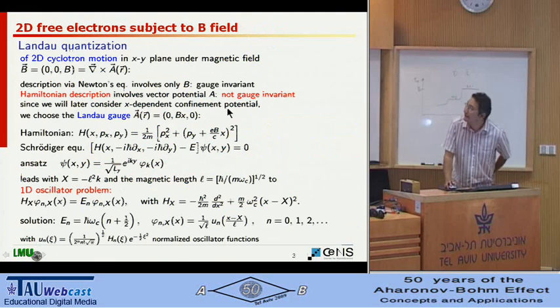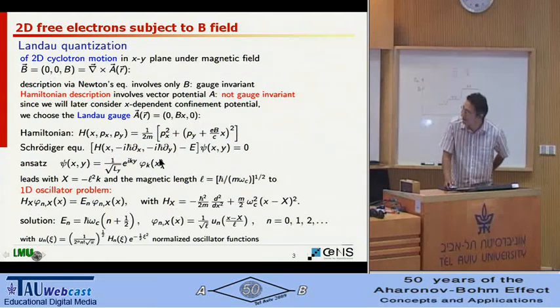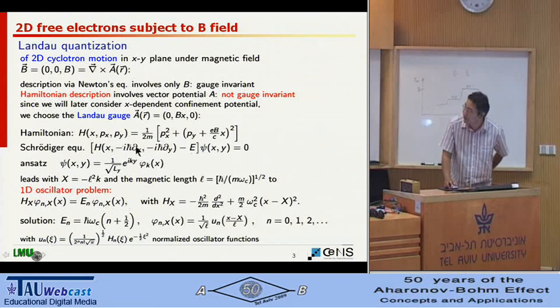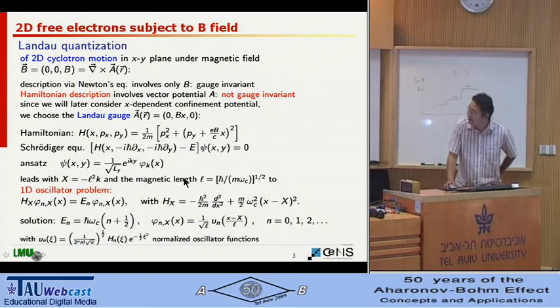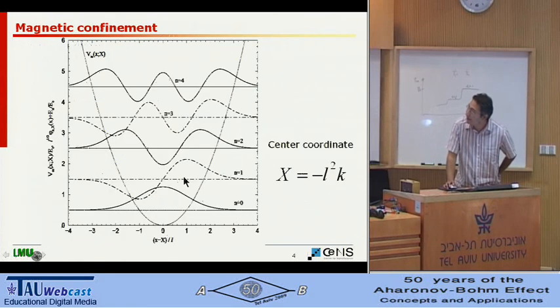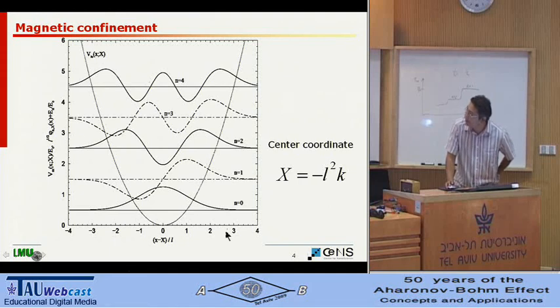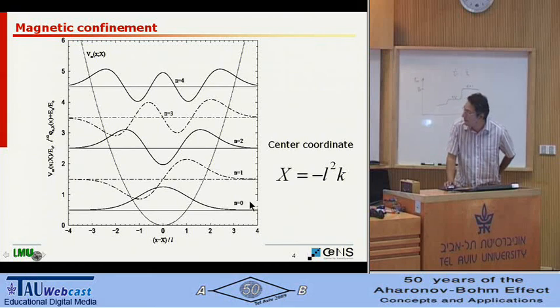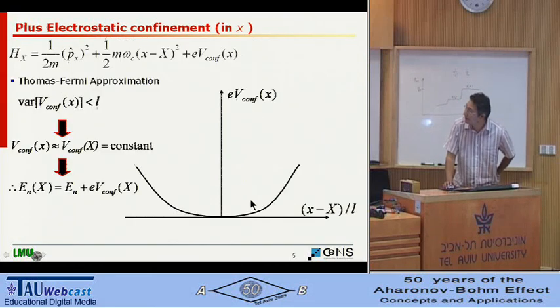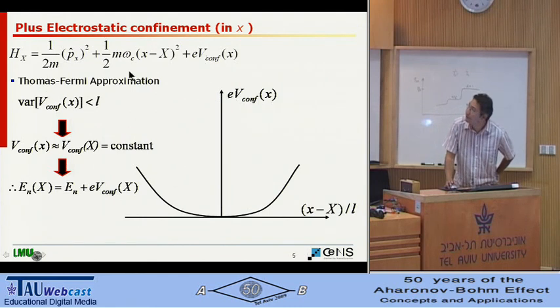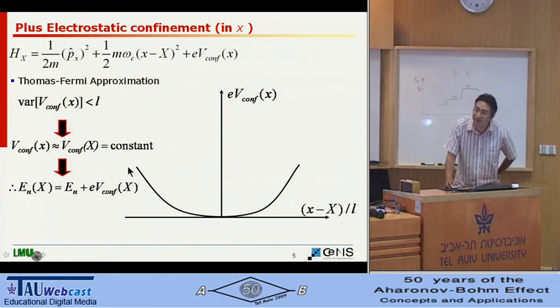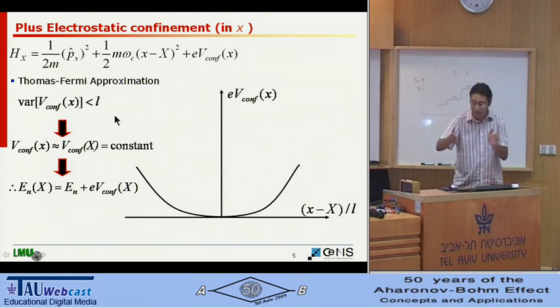Let's start from this Landau quantization. This is simple mathematics. You can reduce the two-dimensional problem to one-dimensional oscillator problem, then finally you have many fold-degenerate Landau levels. And then you can plot your magnetic confinement with a certain center coordinate, which is defined by the momentum in the y direction. Y will be my current direction. Then what you can do as a first approximation is add a confinement potential and do Thomas-Fermi approximation, assuming that the potential is changing slowly on the length scale of magnetic length, which is essentially the extent of the wave function.